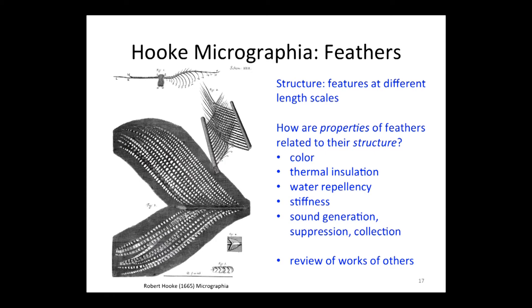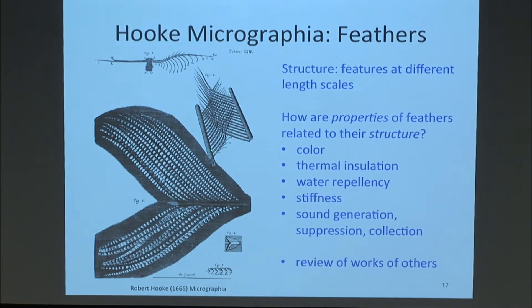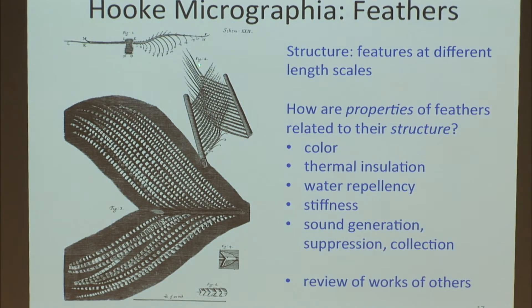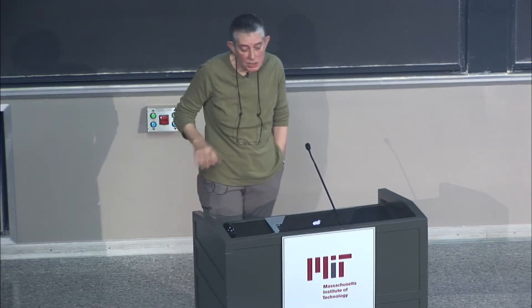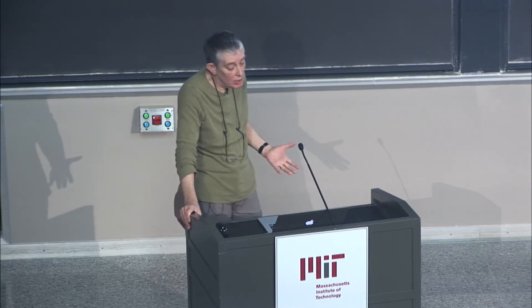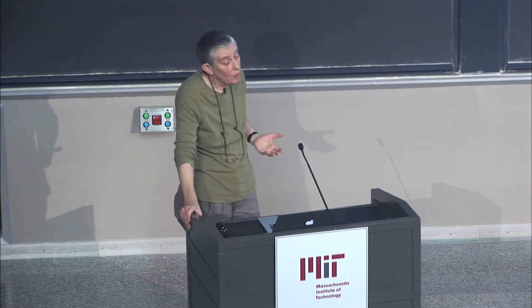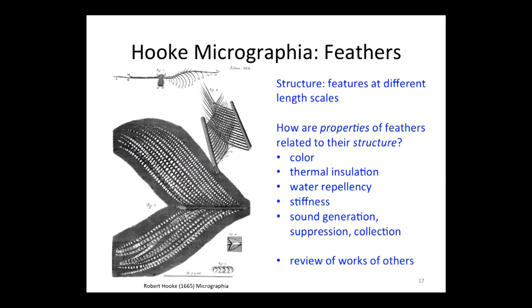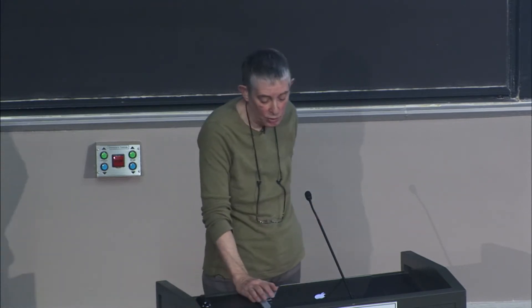He also looked at feathers. This is Robert Hooke's drawing of feathers from his book from 1665. Here's the shaft, the vein, and at higher magnification the pieces that come off the vein, with smaller pieces coming off those. You can see the little tiny hooks he drew. So this is Hooke's drawing of feathers showing structures at different length scales. What I'd like to talk about is how the properties of feathers relate to their structure: color, thermal insulation, water repellency, stiffness, and how feathers collect sound in the barn owl's ruff. This is really a review of literature — other people's work.